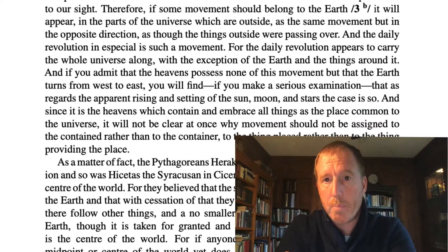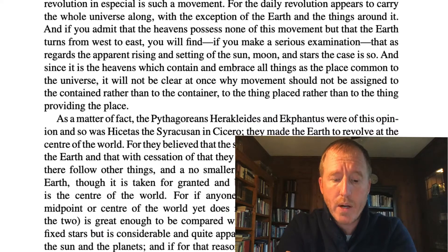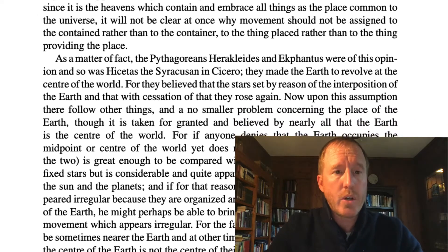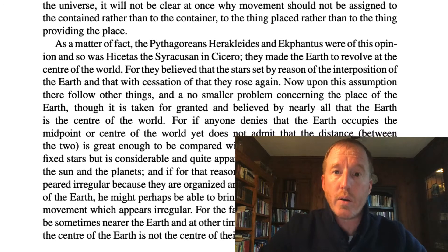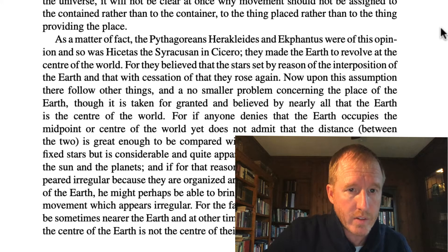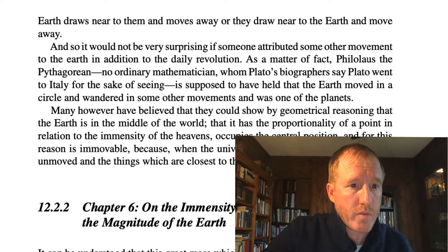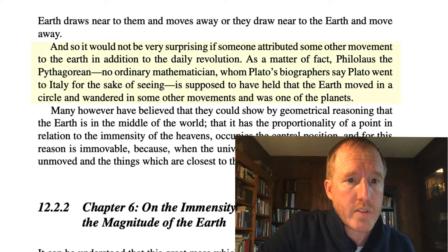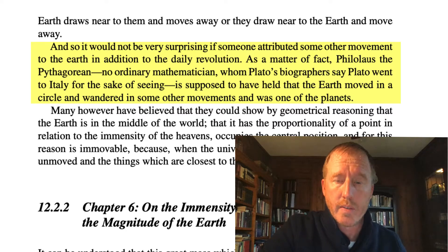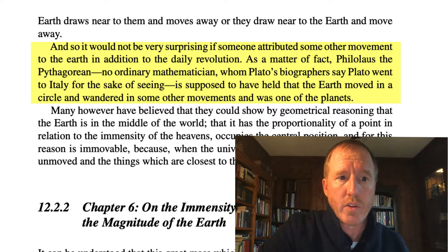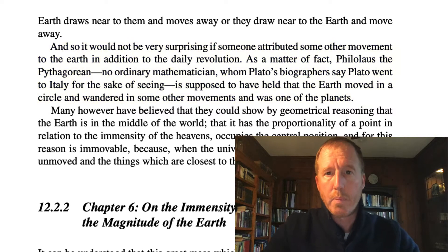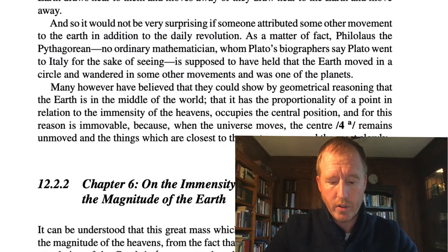Copernicus is saying, well, just because the sun appears to move through the sky doesn't mean it truly is. Perhaps the sun appears to move through the zodiac, but really it is the earth moving. He goes on to argue that many others throughout history, particularly coming out of the Pythagorean school, have argued just this. He notes Philolaus the Pythagorean, saying it would not be very surprising if someone attributed some other movements to the earth. Philolaus — no ordinary mathematician, whom Plato's biographers say Plato went to Italy for the sake of seeing — is supposed to have held that the earth moved in a circle and was one of the planets. So Copernicus is reminding us of historical precedent for believing the earth is in fact one of the planets.